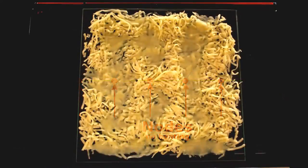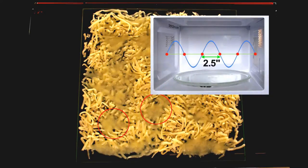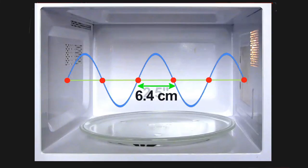If I measure the distance between melted cheese spots, I find about two and a half inches. That would be half the wavelength, the distance between nodes, and is pretty close to the actual wavelength of microwave radiation used.